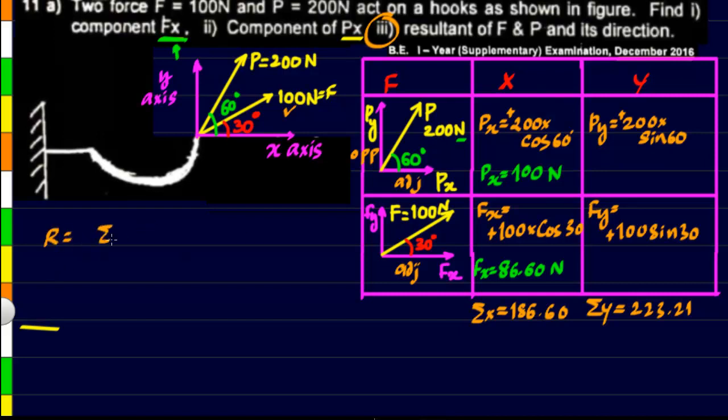And the resultant can be found very simply. There is a formula for this, and this is the formula: summation of x square plus summation of y square under the square root.